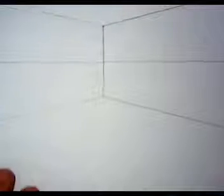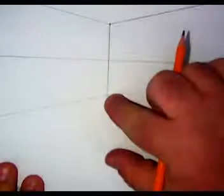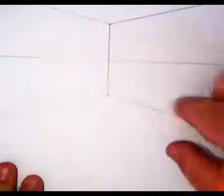At this point, you should be seeing your room. This is the corner of the room. This is one wall, two walls, ceiling and floor.